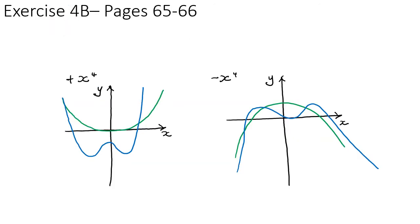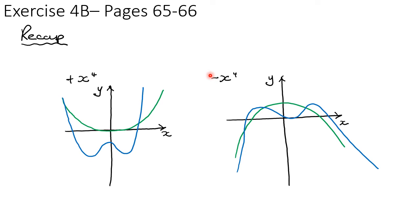You should now be able to do exercise 4b on pages 65 to 66. A quick recap: all that's needed is the shape of quartic graphs — U-shaped if the coefficient of the x to the power four term is positive, or N-shaped if the coefficient is negative.